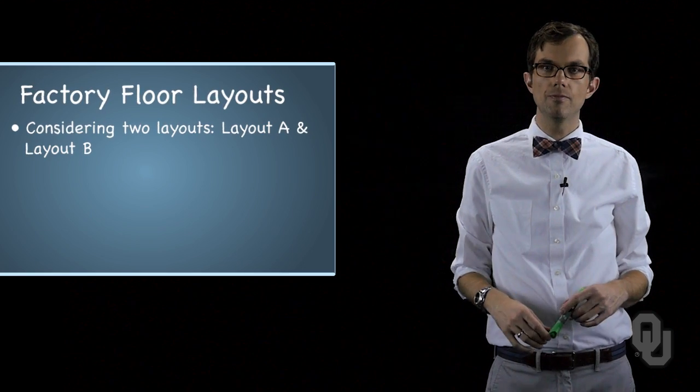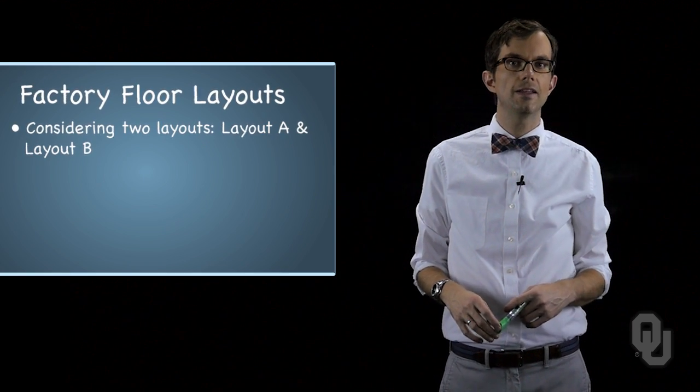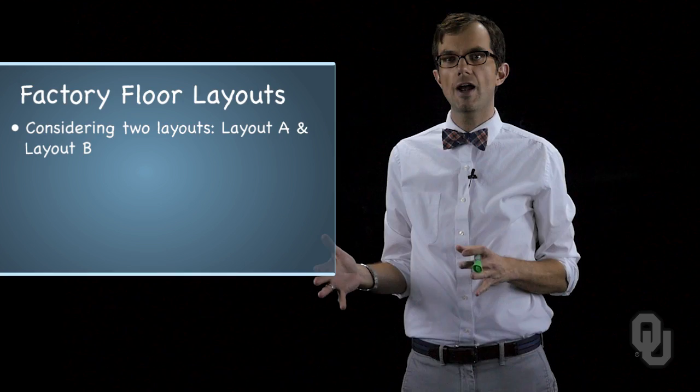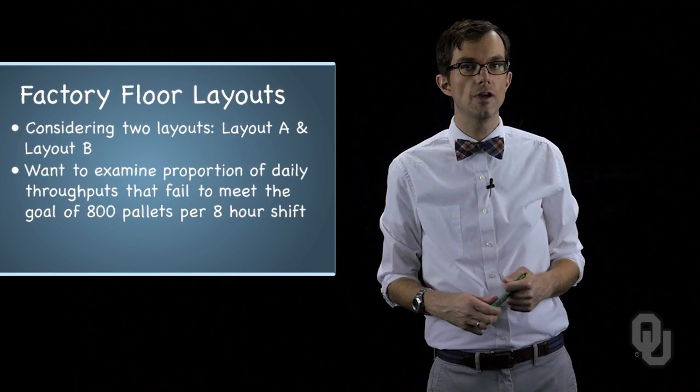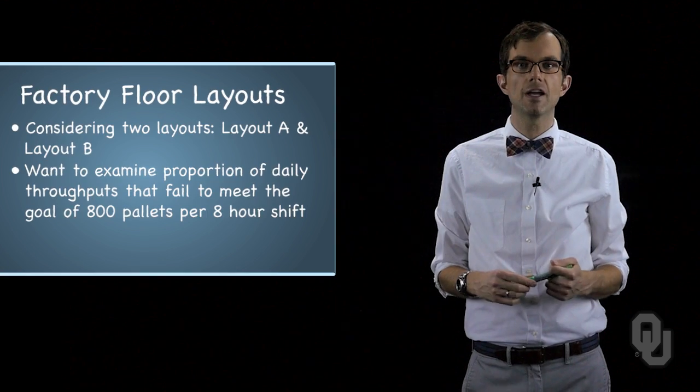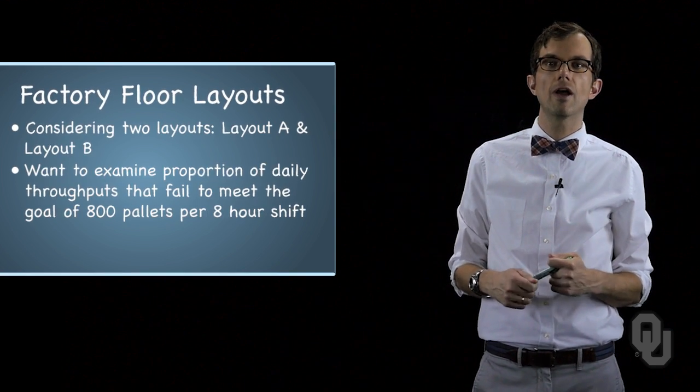Let's look at another example. Recall the problem that you as a production engineer were encountering at Norman's fourth largest cracker factory. You're considering two different layouts for the factory floor, layout A and layout B. Instead of comparing mean daily throughput measured in pallets of cracker boxes for each factory layout, we want to examine the proportion of daily throughputs that fail to meet the company goal of eight hundred pallets per eight hour shift.